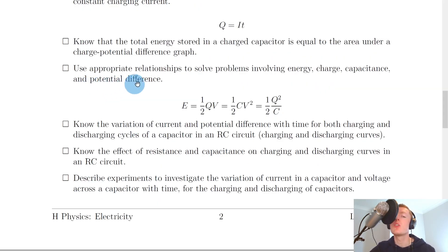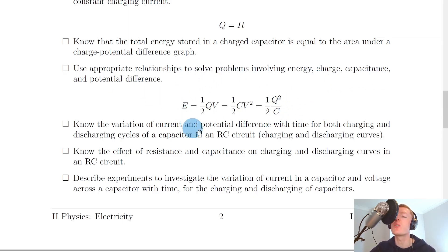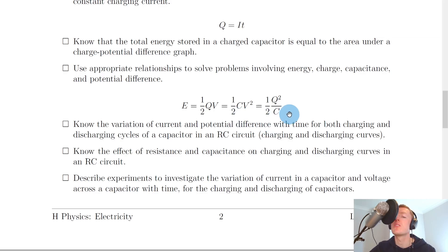You should also be able to use appropriate relationships to solve problems involving energy, charge, capacitance and potential difference. Remember our three energy equations for capacitors — you choose which one to use depending on the information given. So we have E equals one half QV, E equals one half CV squared, and E equals one half Q squared over C, where capital E is energy measured in joules, and the other symbols have the same meanings as before.